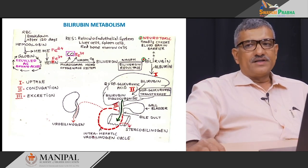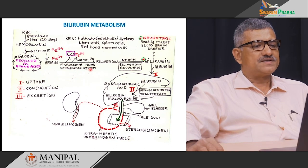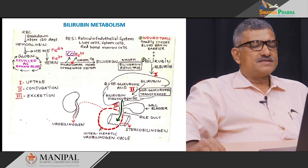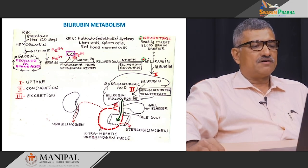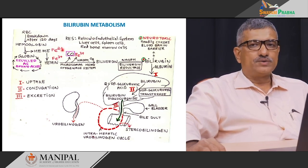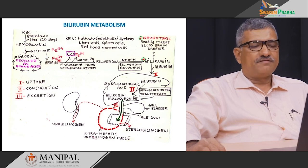In the reticuloendothelial system, hemin is converted to biliverdin by the action of the microsomal heme oxygenase system. This reaction requires NADPH, takes place in the presence of molecular oxygen, and this is the only reaction in our body wherein carbon monoxide is released. In this reaction, we also see the release of iron in its oxidized state, that is, ferric state. There are two states of iron: the reduced state or ferrous state, and the oxidized state or ferric state.